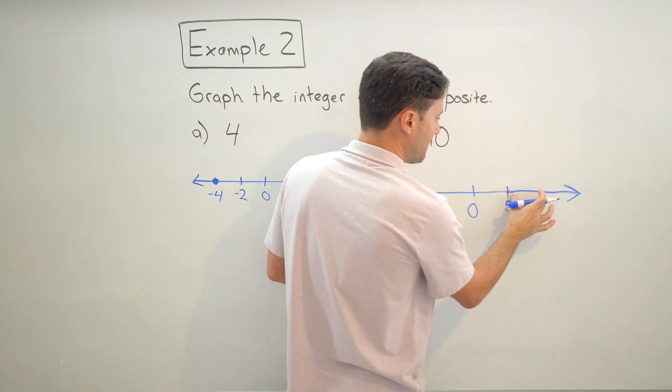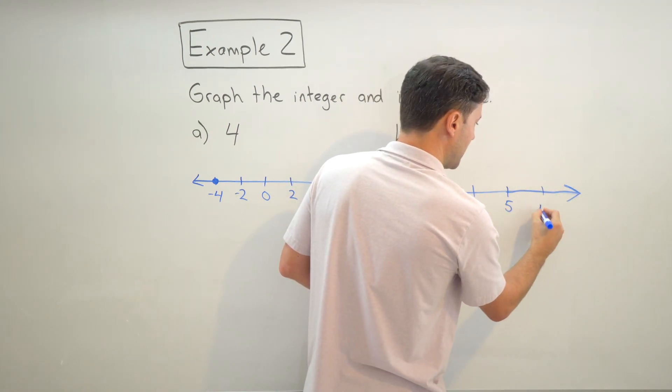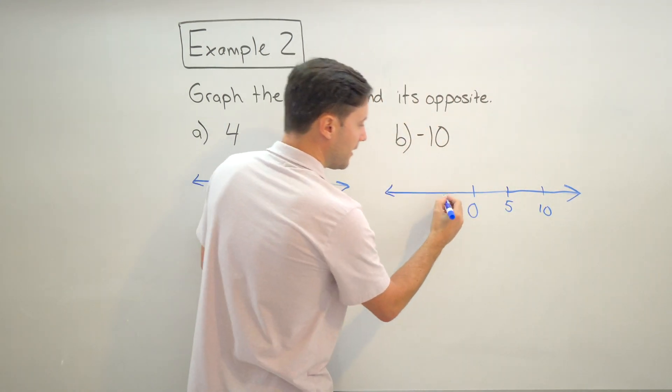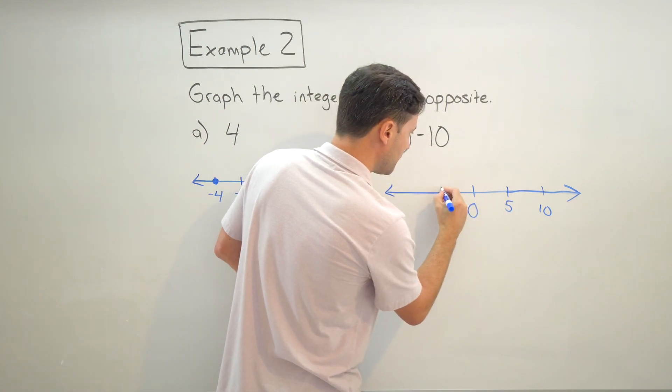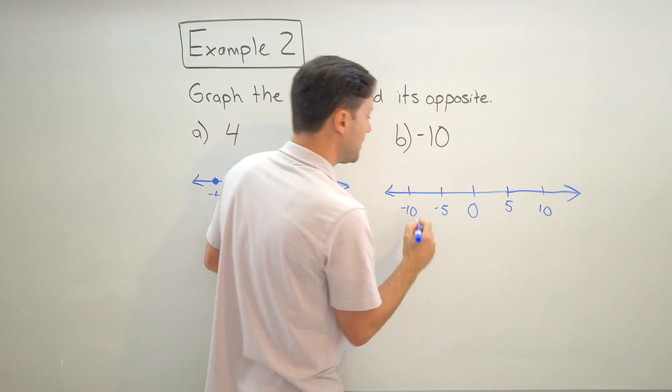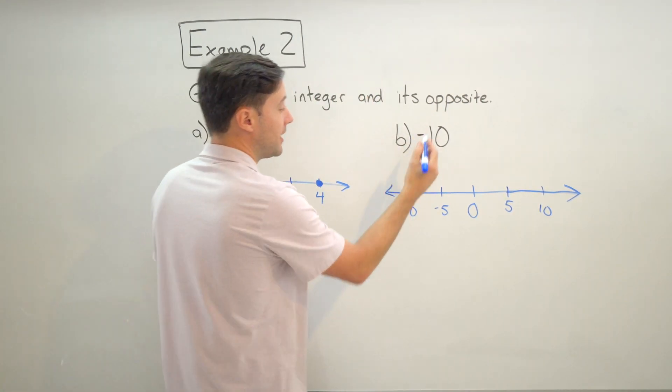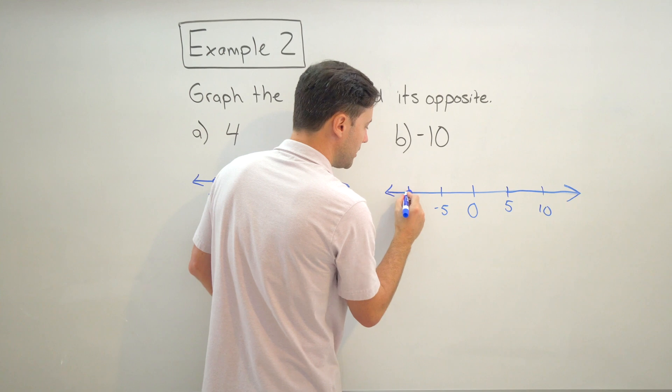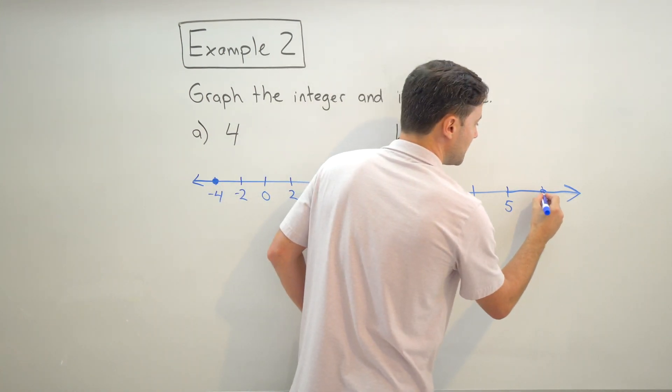And then again, I got to make sure I'm consistent, so that would then be 10. And then same thing here, I'm going to go, that would then be negative five, and then same would be negative 10. And now it's just time to graph, so negative 10 put a point, and at 10 another point. There you go.